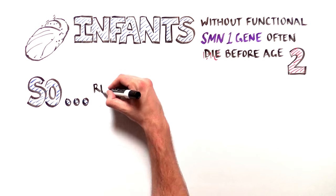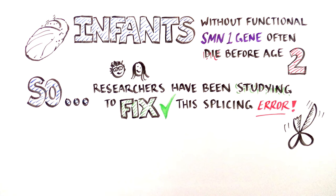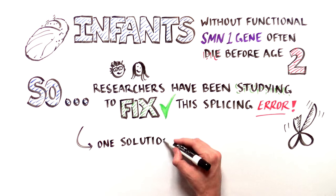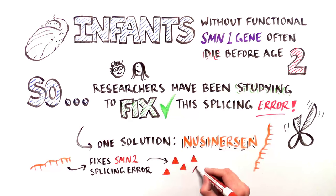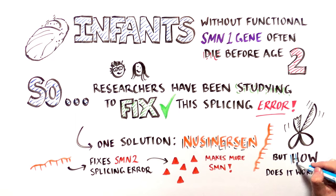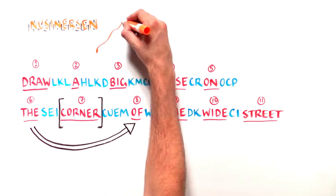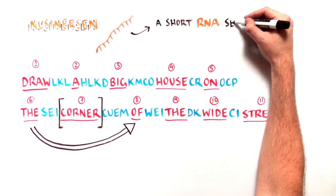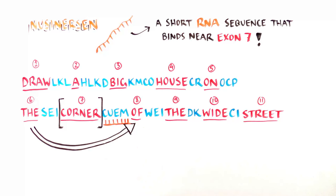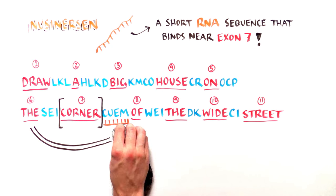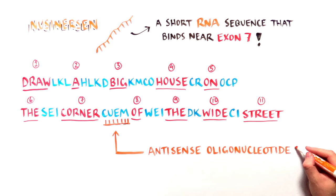Researchers have been studying how to fix this splicing problem. One solution is called nusinersen. It enables SMA patients to make more SMN protein. Nusinersen is a short sequence of RNA that binds just after exon 7 in the unedited RNA message, preventing exon 7 from being skipped. It is called an antisense oligonucleotide, or ASO.